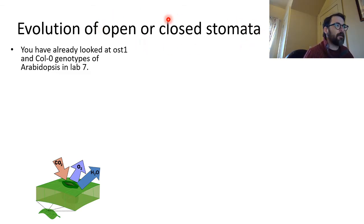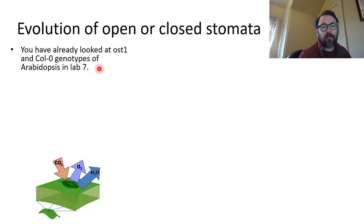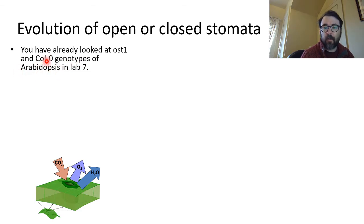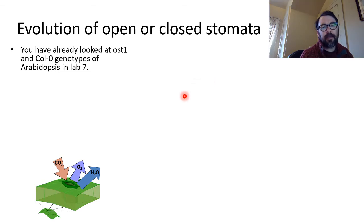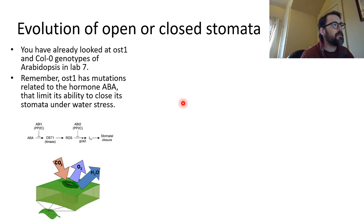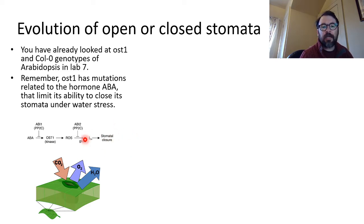In the past, students used to look at Arabidopsis mutants. Columbia-0 is the wild type, and OST1 is a mutant that has had changes to its ability to close stomata. These are mutants that humans created in order to understand how stomata work.